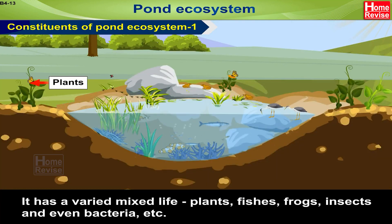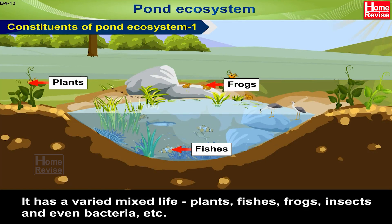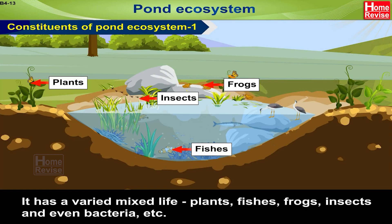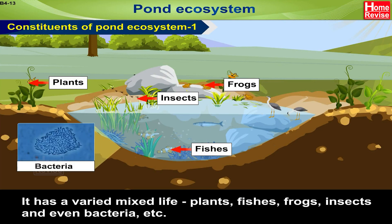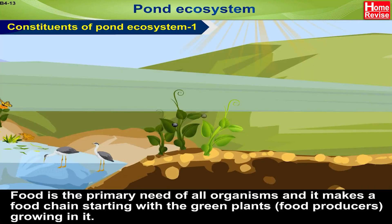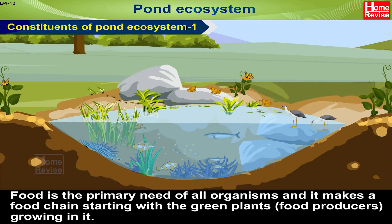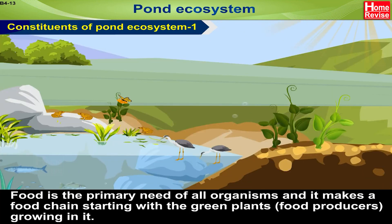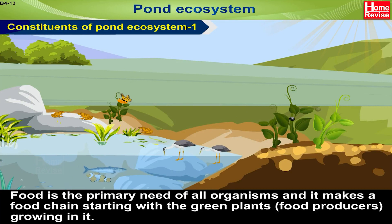A pond has a varied mixed life — fishes, frogs, insects, and even bacteria, etc. Food is the primary need of all organisms, and it makes a food chain starting with the green plants, i.e. the food producers, growing in it.